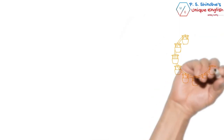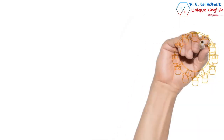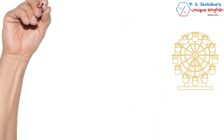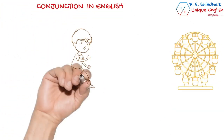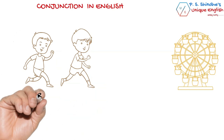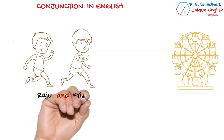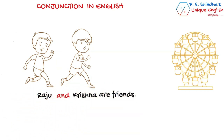A conjunction is a word that joins words, phrases, or clauses. Let's see an example in each case. 'Raju and Krishna are friends.' Here, the two words connected are Raju and Krishna, and they are equally ranked words — both are nouns.